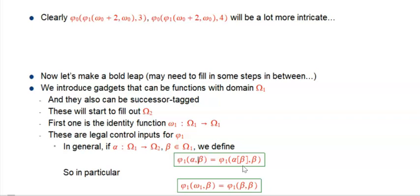In general, if you have any gadget that takes an input in omega1, and it can have an input in this brand new omega2—which we've literally only named one element of, but there will be more—and if beta is an omega1 gadget, then we define this by diagonalizing. If alpha is this new, somewhat more powerful gadget that actually has inputs in the omega1 level, then phi1 of alpha, beta just says, okay, diagonalize, feed whatever that beta is in here, also into the alpha in the first slot.